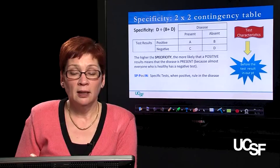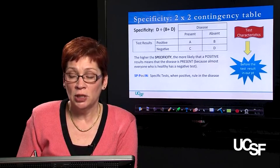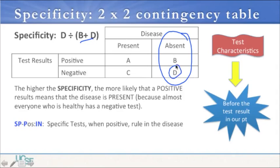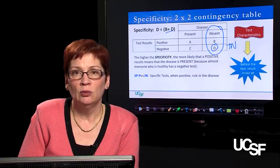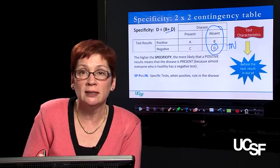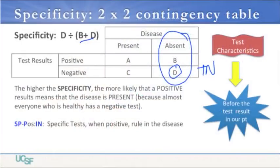Now let's look at specificity. Specificity is the proportion of people who are free of disease — that's B plus D — who actually test negative for disease, which is quadrant D, the true negative rate. The formula is D over B plus D. A specific test is very good at ruling in disease, because virtually everyone free of disease tests negative. So if that test turns up positive, the person probably has the disease. We remember this with the acronym SPIN: a SPecific test, when positive, rules IN the disease.